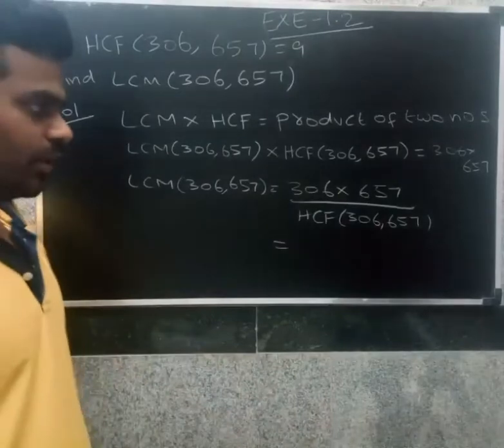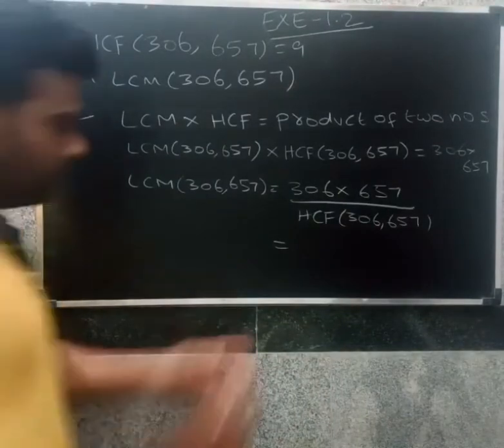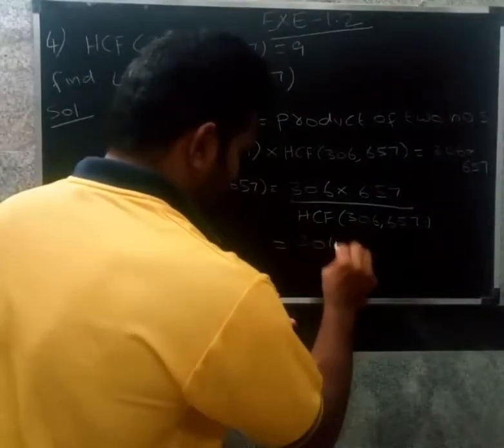306 multiplied by 657. That answer is 2,01,042.